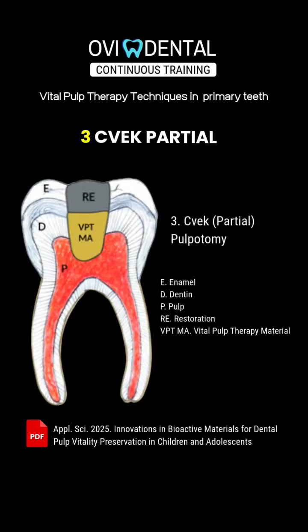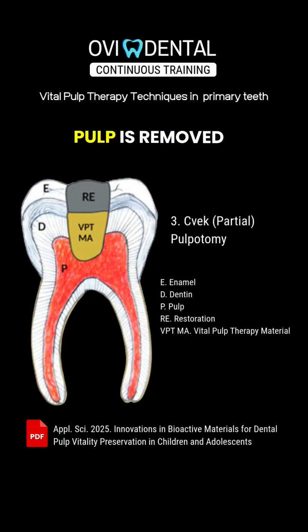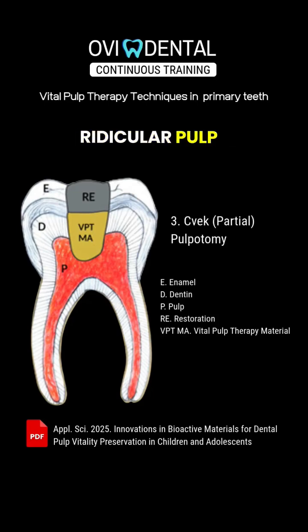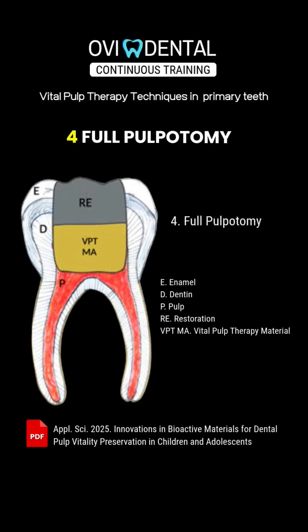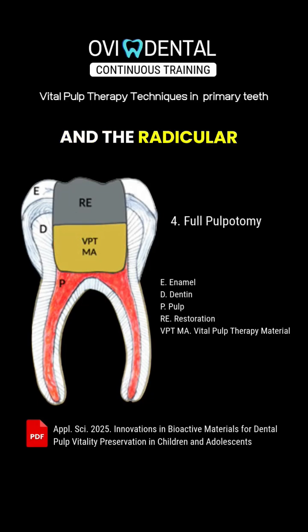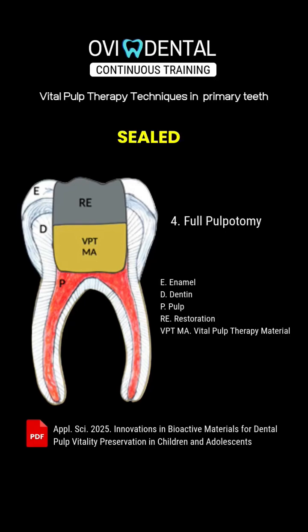3. CVEC partial pulpotomy: a portion of the inflamed coronal pulp is removed to preserve healthy radicular pulp, and a capping material is applied to the prepared pulp exposure. 4. Full pulpotomy: the entire coronal pulp is removed and the radicular pulp is covered with pulp capping material and seal.